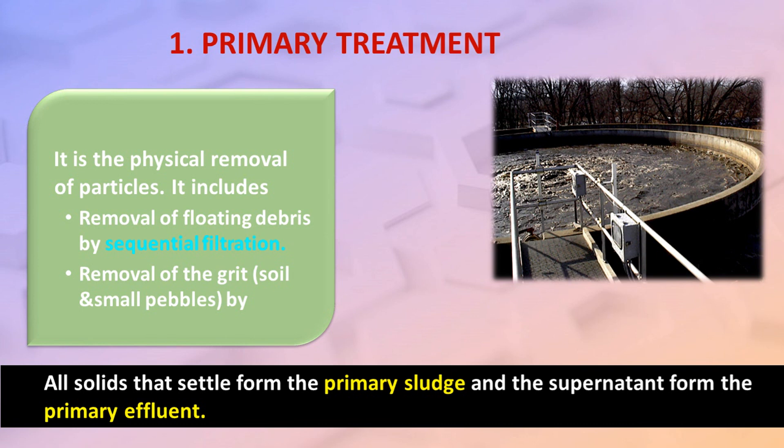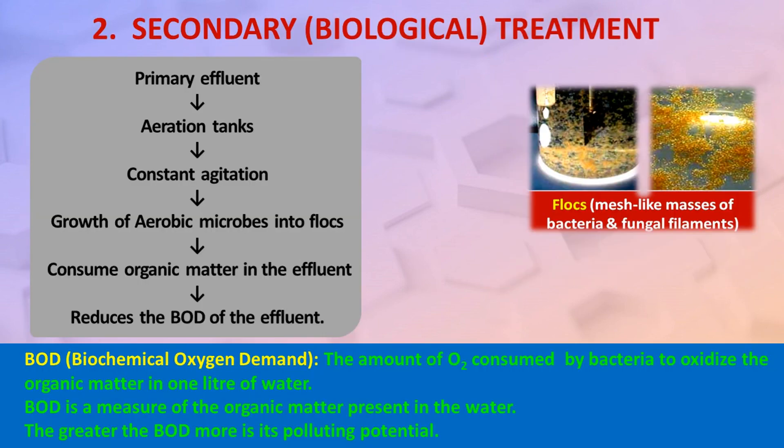Primary treatment also includes removal of grit. All solids that settle form the primary sludge, and the supernatant forms the primary effluent. Secondary treatment involves measuring BOD — biochemical oxygen demand — which is the amount of O2 consumed by bacteria to oxidize the organic matter in one liter of water.